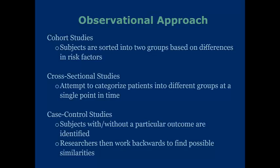Observational approaches can take form in three different ways common in research with human subjects. Cohort studies observe subjects sorted into two groups based on differences in risk factors. Cross-sectional studies attempt to categorize patients into groups at a single point in time. Case control studies are when subjects with or without a particular outcome are identified, and researchers work backwards to find possible similarities and correlations. Be careful though — with case control studies, it's easy to find correlations that are not necessarily true.